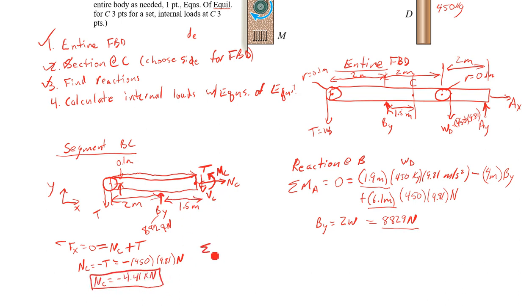Alright. Now, sum of my forces in Y. So what do I have acting in Y? I have negative tension, positive BY. So negative tension plus BY. And then I have negative shear at C. So my shear at C is going to be BY minus T. So this is 2W minus W plus W. So VC is also going to be 4.41 kilonewtons.